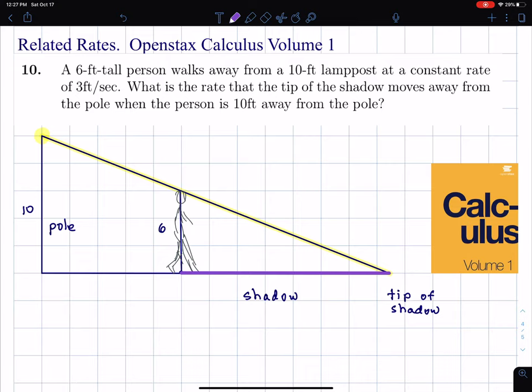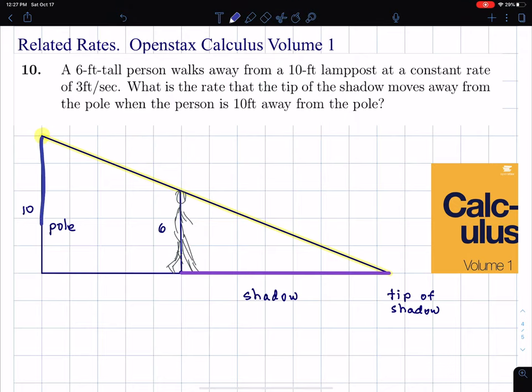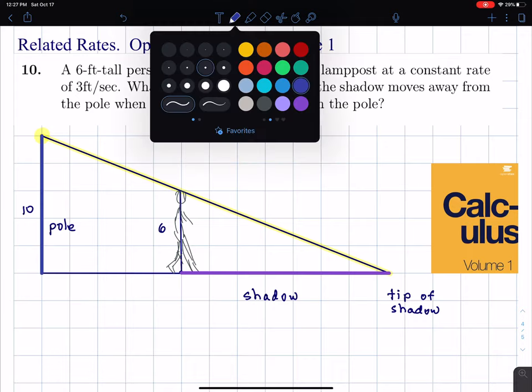Now the pole is given over here as shown as a vertical line, and what we see is we have two right triangles, and we'll use that.